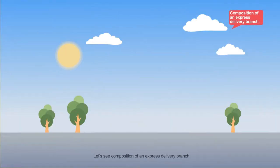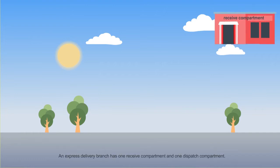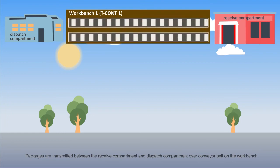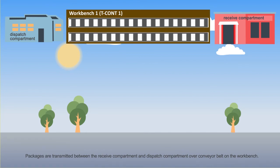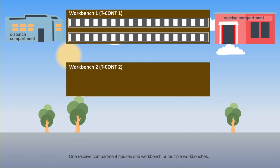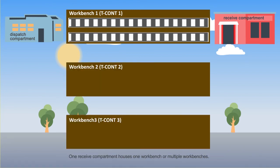Let's see the composition of an AnExpress Delivery Branch. An AnExpress Delivery Branch has one received compartment and one dispatched compartment. Packages are transmitted between the received compartment and dispatched compartment over a conveyor belt on the workbench. One received compartment houses one workbench or multiple workbenches.